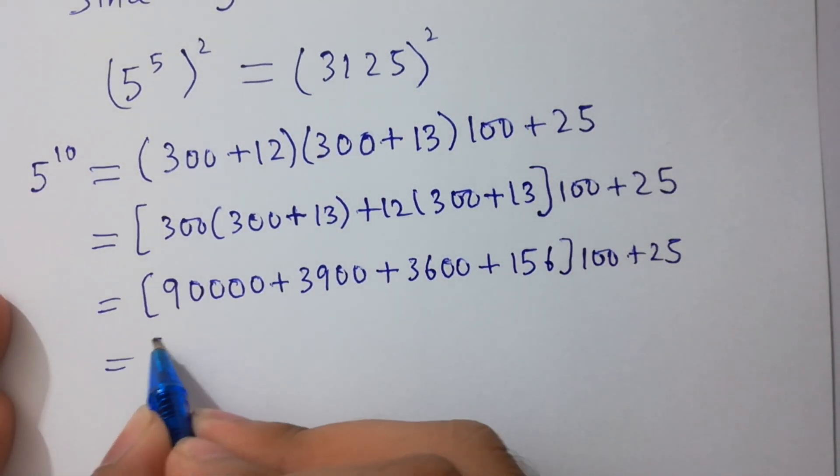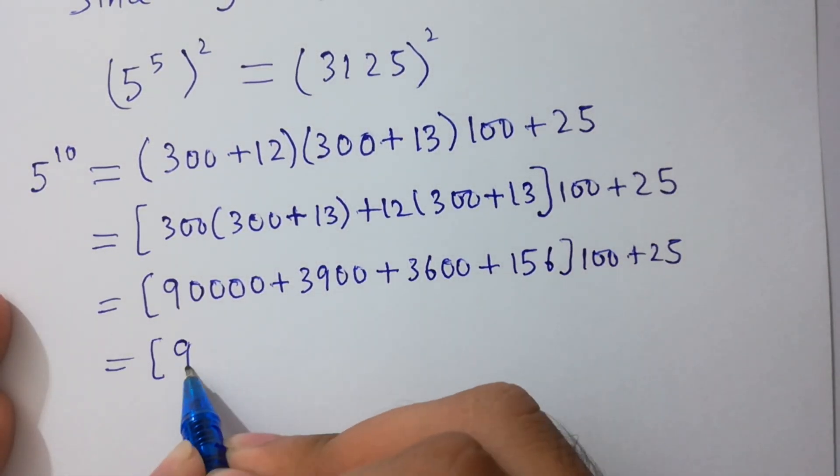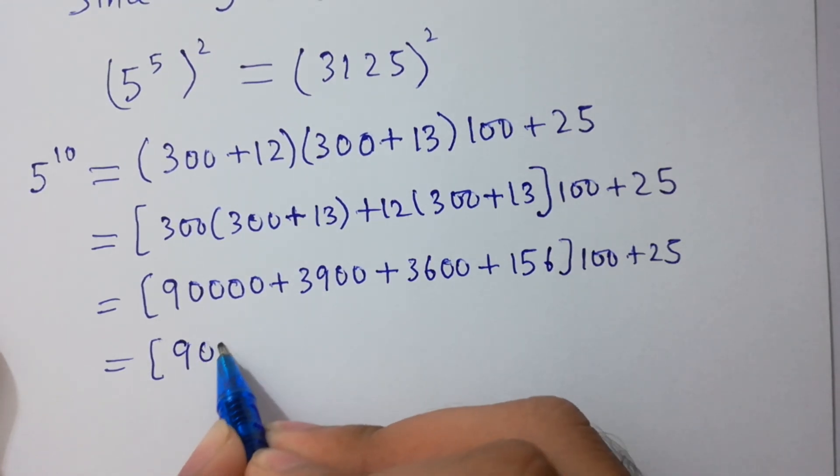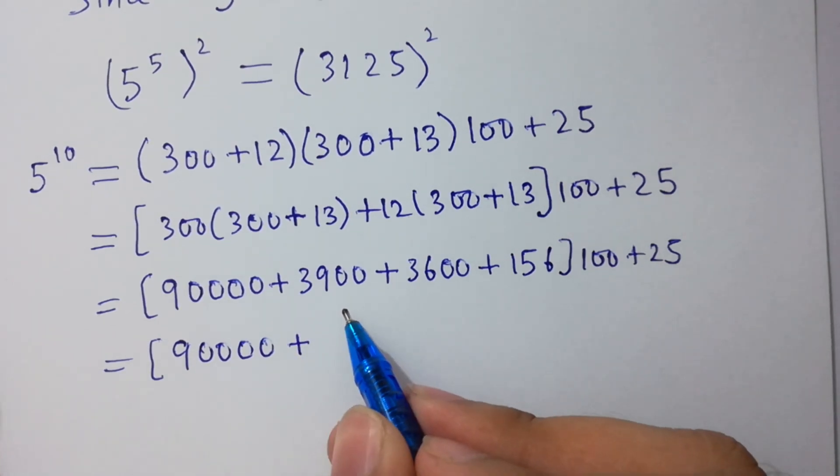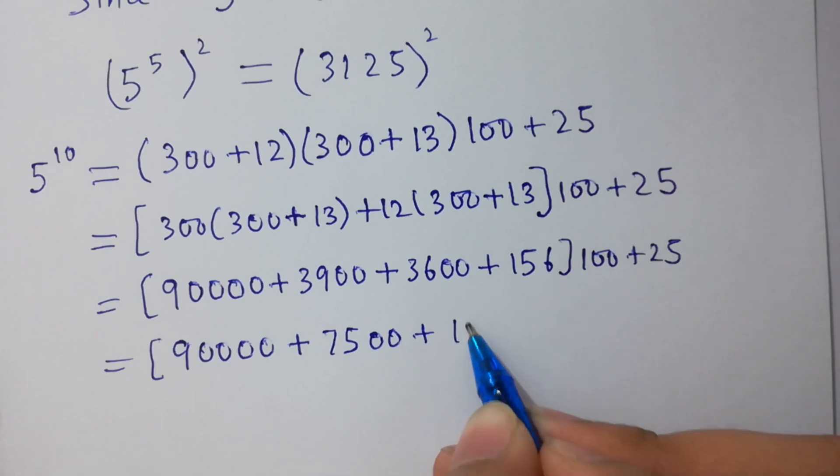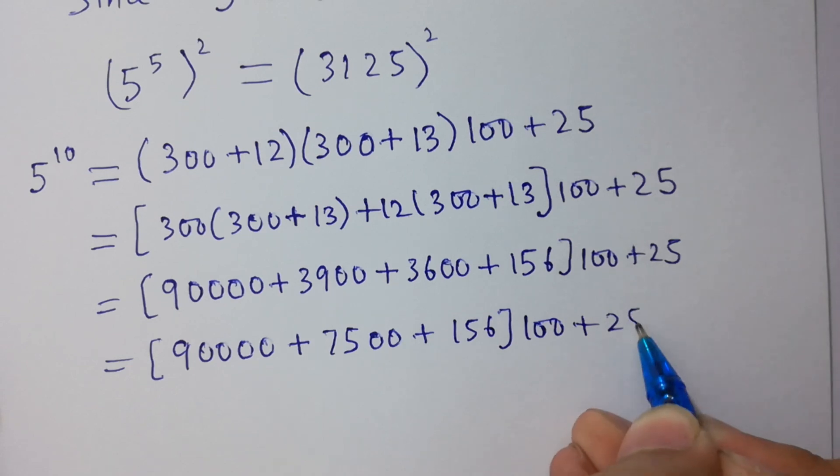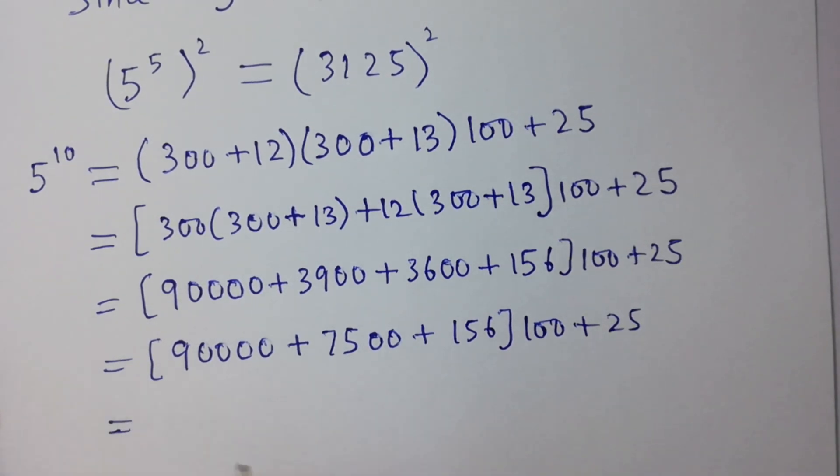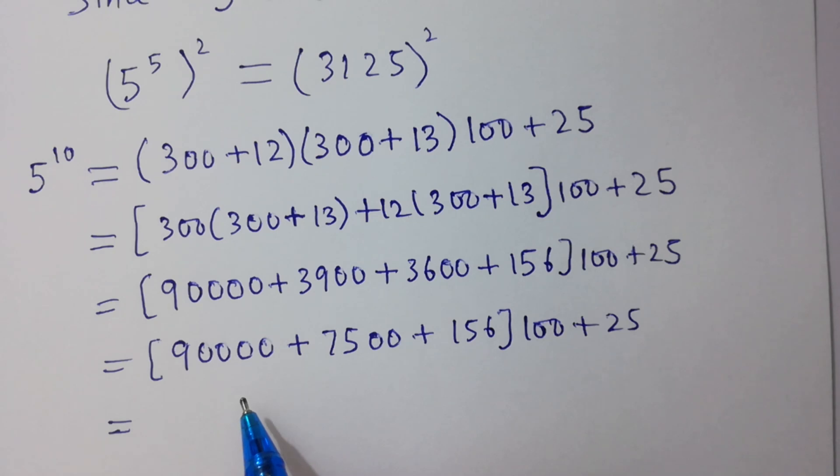Next, 90,000 plus 3900 plus 3600 equals 7500. So by adding them, 90,000 plus 7500 plus 156 we get 97,656...